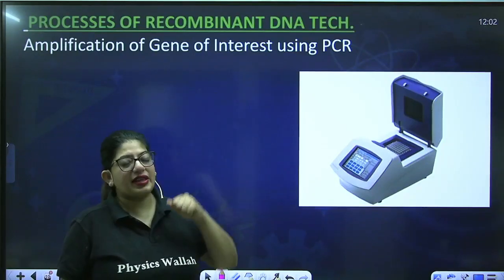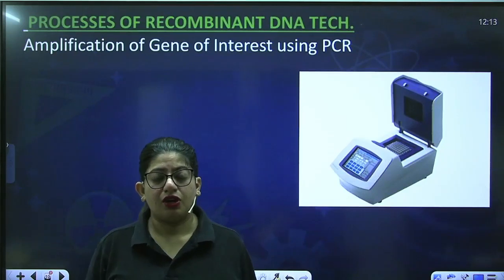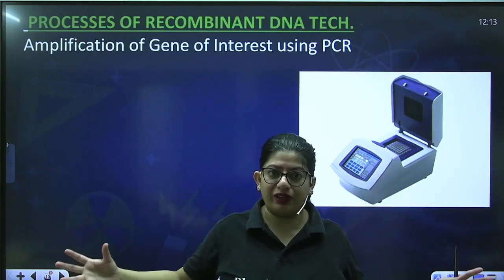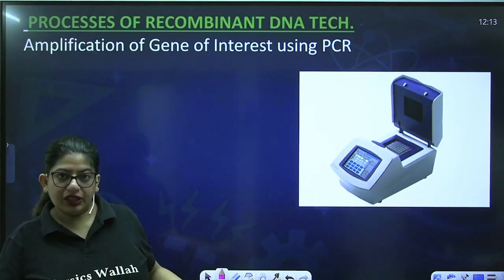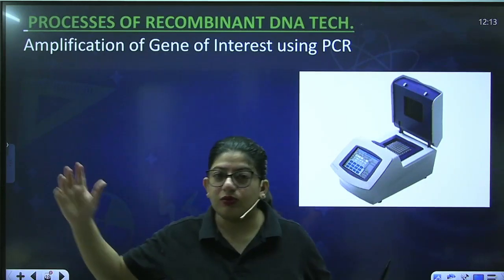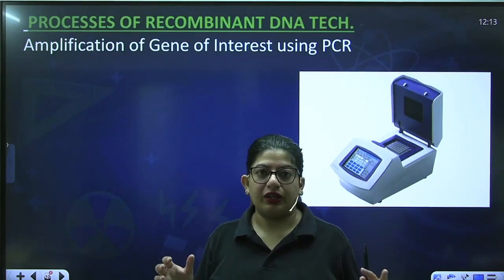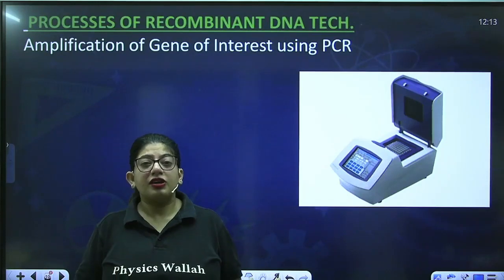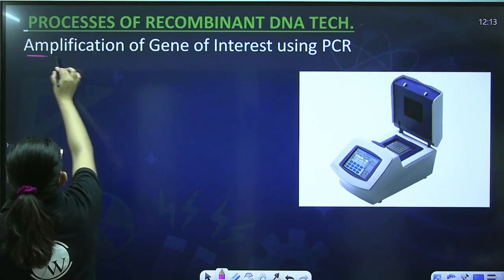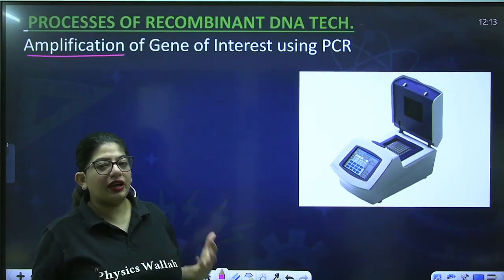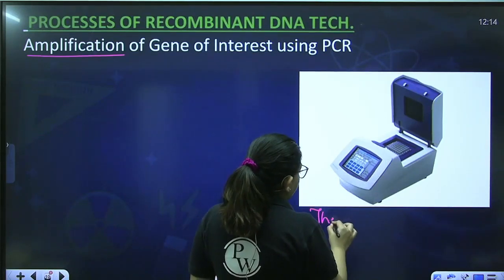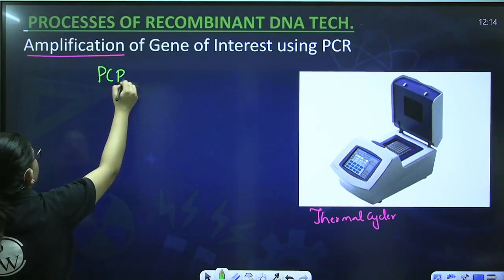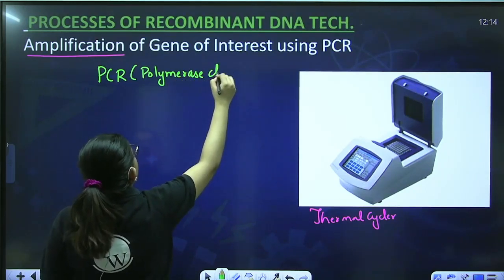Next is amplification. The gene of interest we have taken out is very small in quantity, but we want to make a large amount of product from it. For example, if that gene was an insulin-secreting gene, we need a large quantity to bottle and market insulin for diabetic patients. We want to multiply it — that is amplification — and we can do this with a machine called the thermal cycler.